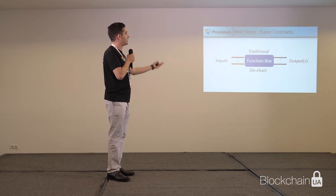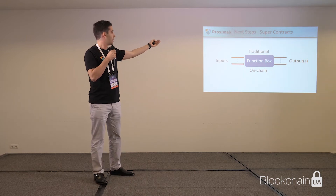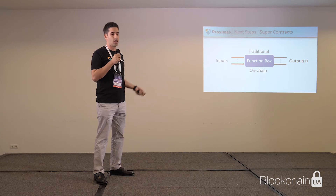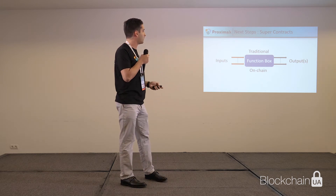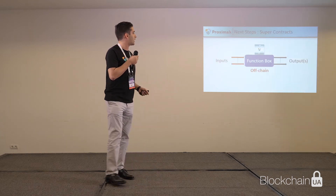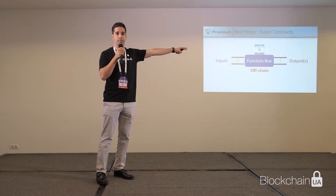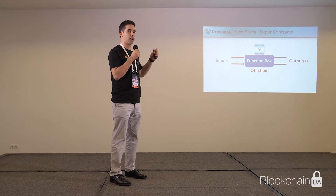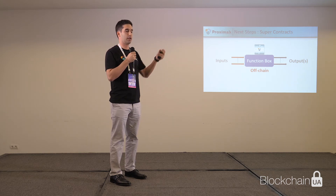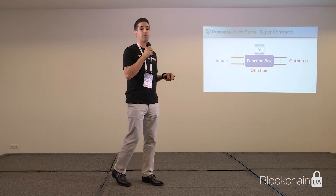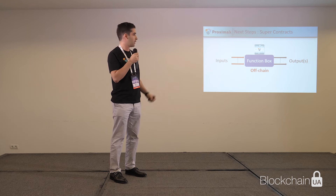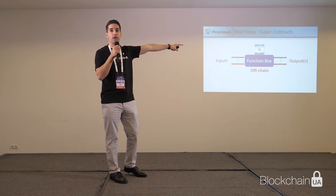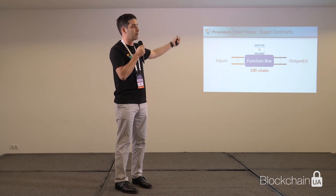Smart contracts are basically a function box with a decision tree — they give outputs based on inputs. Smart contracts can slow down and bloat a network because they are usually on-chain, so what we have done is put smart contracts off-chain onto our storage layer, which solves that problem. Another issue is that because they are on-chain, if there is a bug or they're not working properly, a business could lose money — there are many examples of this. So we're creating a consensus where you can change the function box halfway through a contract. We're calling it super contracts, and it will be available at the end of the year.